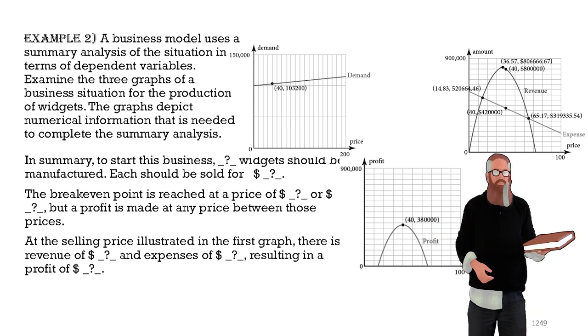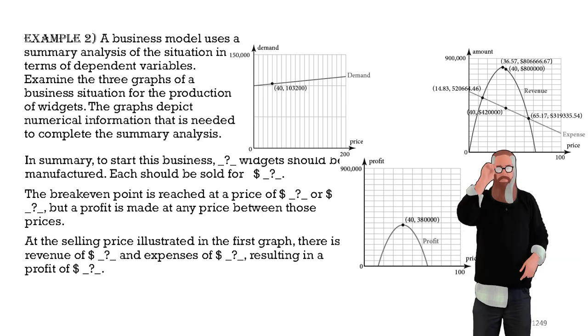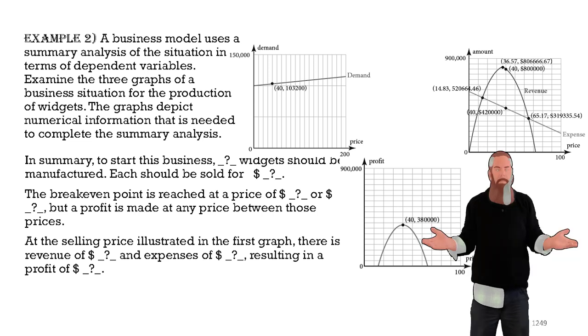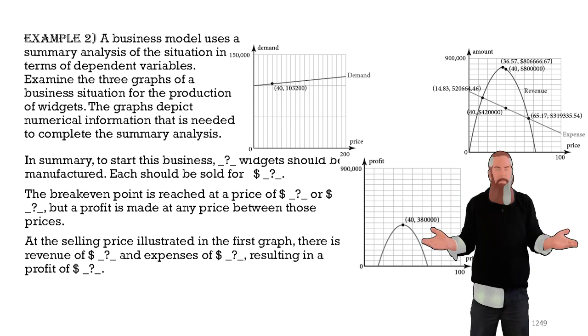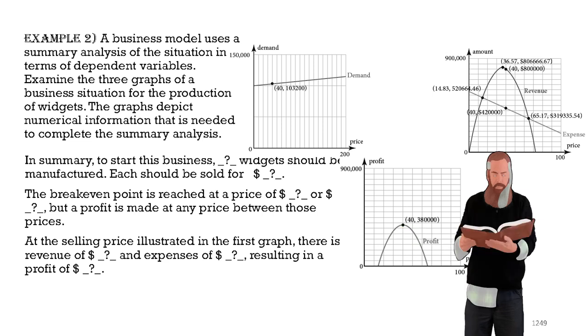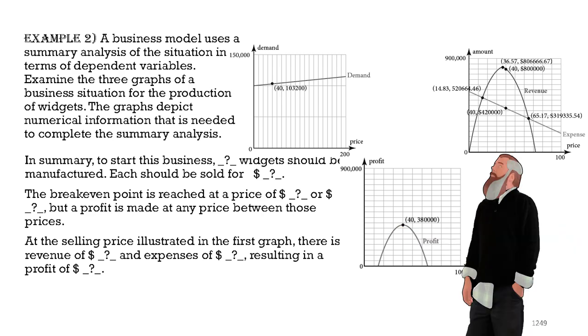The summary analysis should have the following format. In summary, to start this business, blank widgets should be manufactured. Each should be sold for blank dollars. The break-even point is reached at a price of blank dollars or blank dollars. But, the profit is made at any price between those prices. At the selling point illustrated in the first graph, the revenue of blank dollars and expense of blank dollars results in a net profit of blank dollars.